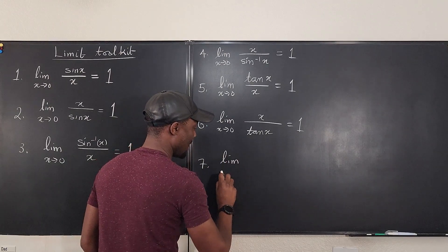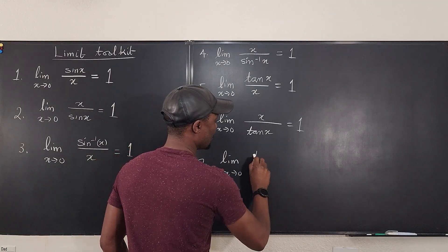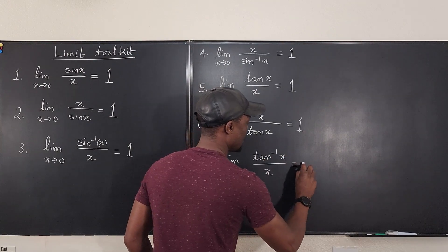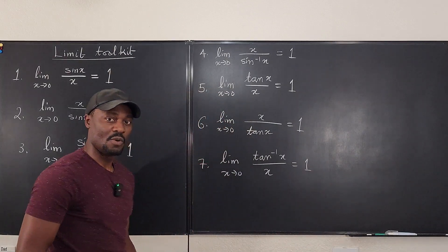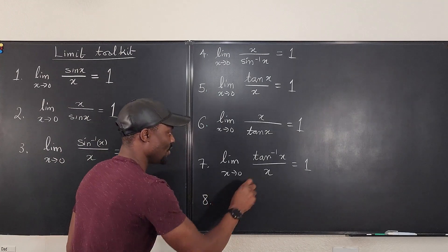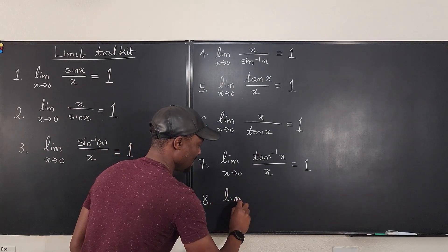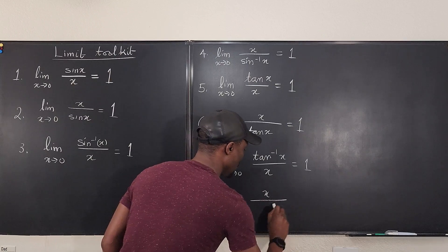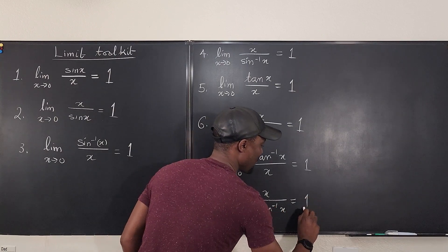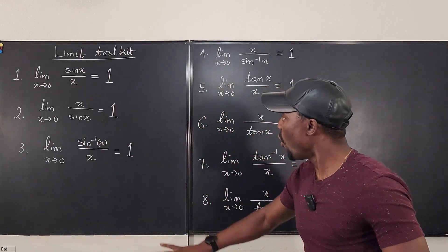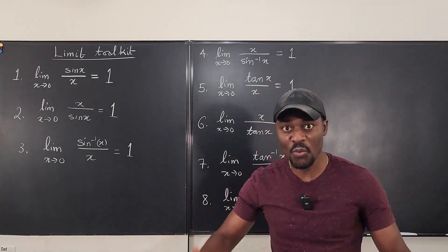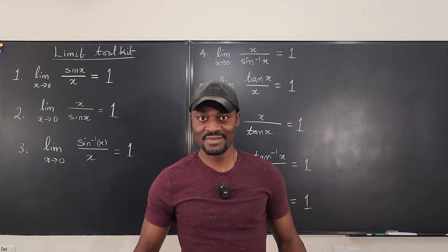Number seven is the limit as x goes to zero of arctan of x over x, which is equal to one. Number eight, we flip this: the limit as x goes to zero of x over arctan of x is equal to one. Look at what I've written — all of these are all one. All the limits are one. Beautiful, right?